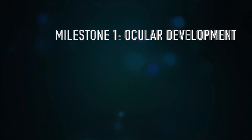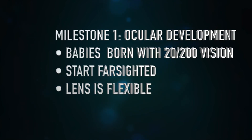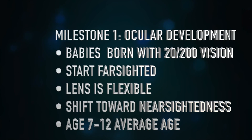The development of our eyes from birth is rapid and intense. A newborn baby actually has about 20/200 vision, but that vision rapidly improves as he or she starts seeing the world. Most babies start out somewhat farsighted and have very flexible lenses, and can use the focusing power to improve their vision. As we age, the refractive error shifts progressively nearsighted, with myopia typically appearing between age 7 and 12.